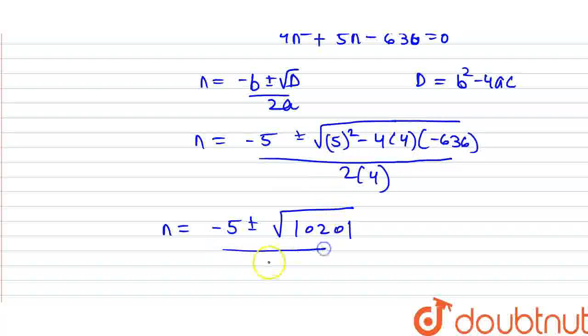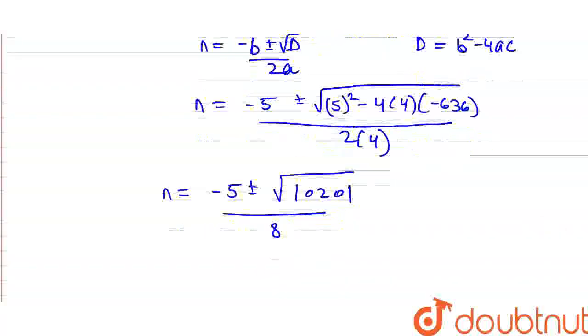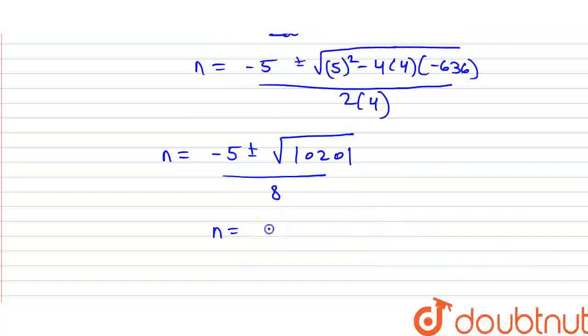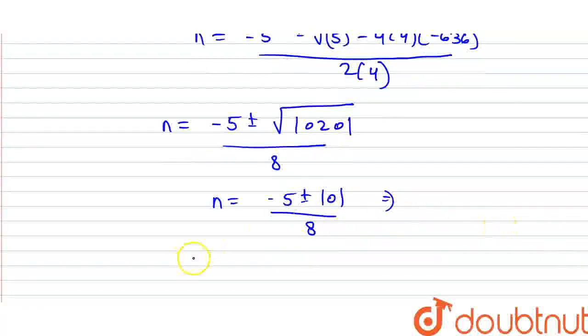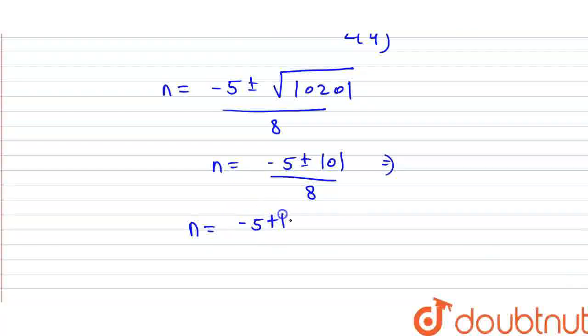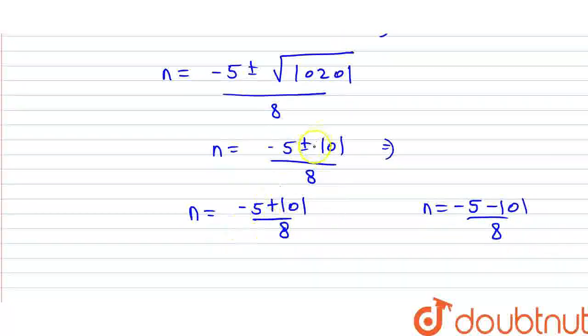10201 upon 8. Minus 5 plus minus 101 upon 8. So here we have 2 values: one n equals minus 5 plus 101 upon 8 and one n value minus 5 minus 101 upon 8.